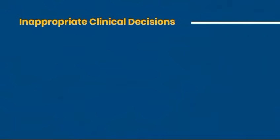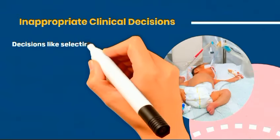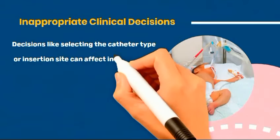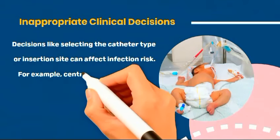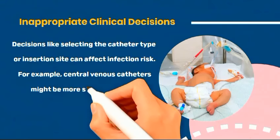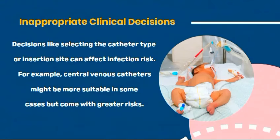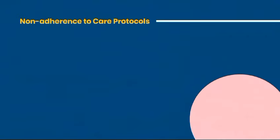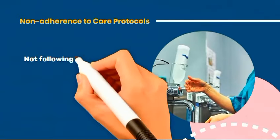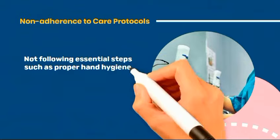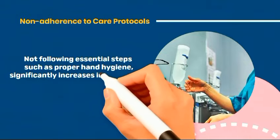3. Inappropriate clinical decisions — decisions like selecting the catheter type or insertion site can affect infection risk. For example, central venous catheters might be more suitable in some cases, but come with greater risks. 4. Non-adherence to care protocols — not following essential steps, such as proper hand hygiene, significantly increases infection risk.